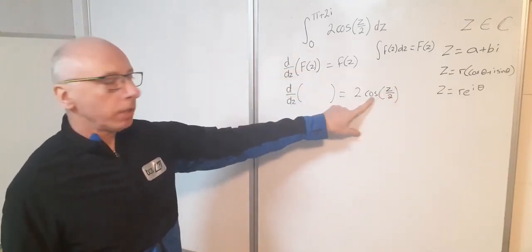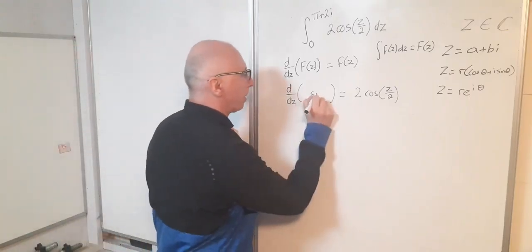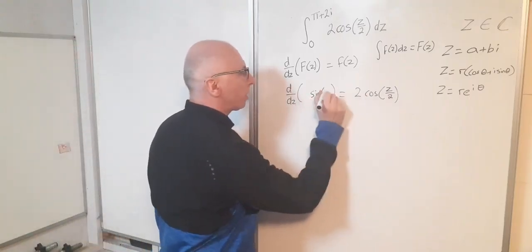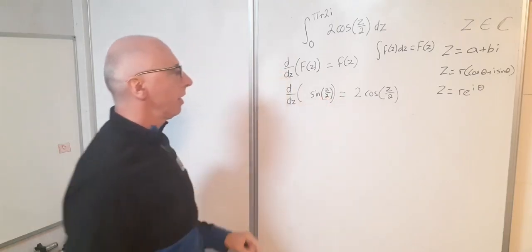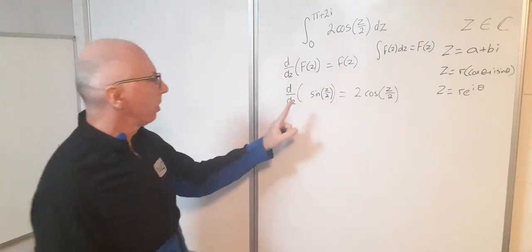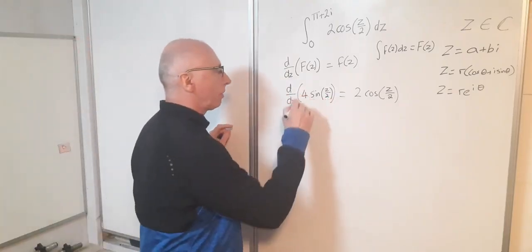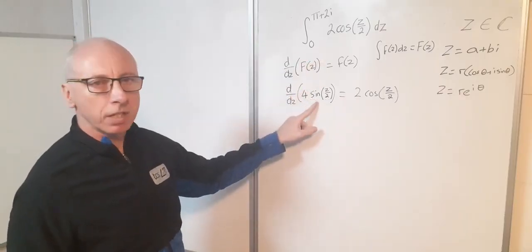Now take the derivative of something to get cosine, I'm going to have a sine. The input is z over 2 so that's going to stay there. Then I need by the chain rule something multiplied by a half to get 2, so this is going to be a 4. 4 times a half gives me 2. So therefore my result of my integration is going to be this.